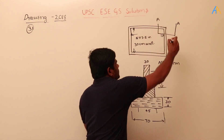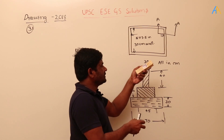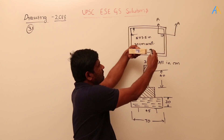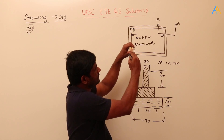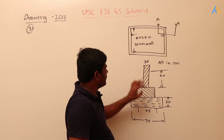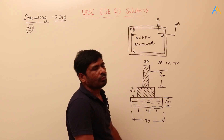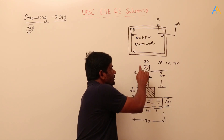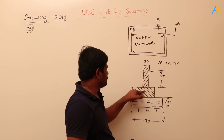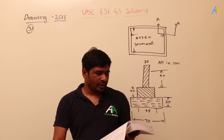To see the foundation, I will cut the structure and look at it. When I cut here, I can see the portion going into the board. That portion is the wall, below it is the first footing, and below that is the base. In the top view, we are seeing only the wall — below that we have a first footing, and below that we have a base.